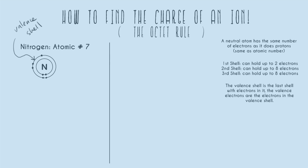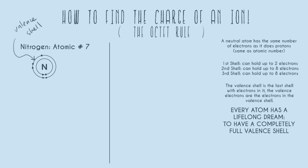Nitrogen has five valence electrons because it has five electrons in that last shell. Now, every atom has a secret lifelong dream — and every atom on the periodic table shares the same dream: to have a completely full valence shell. Every move an atom makes is just to achieve that dream. It'll try to trade or gain electrons, doing anything it can to fill its valence shell with no empty spots. Our second shell can hold up to eight electrons, and nitrogen only has five right now. So nitrogen says: I've got five electrons in my second shell, but I really want three more to fill it up.